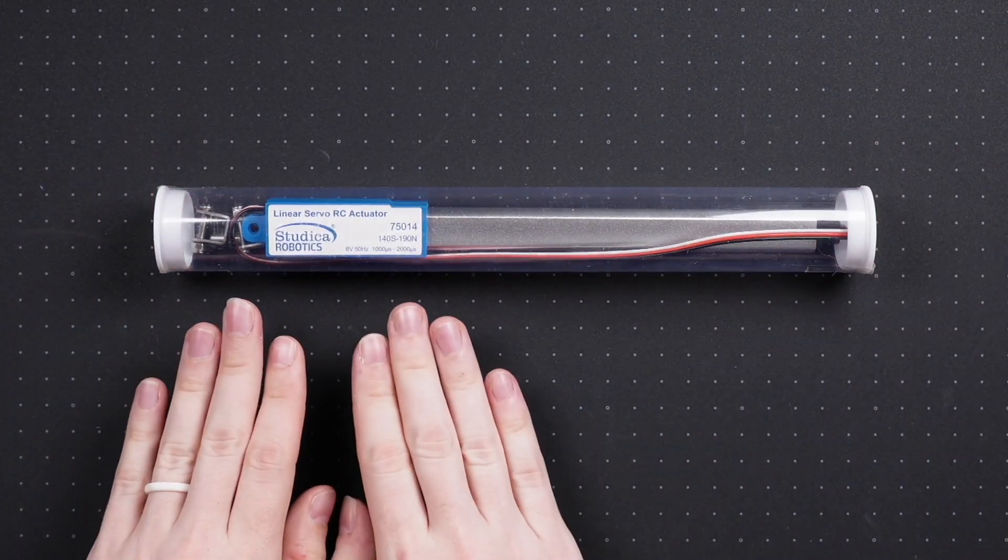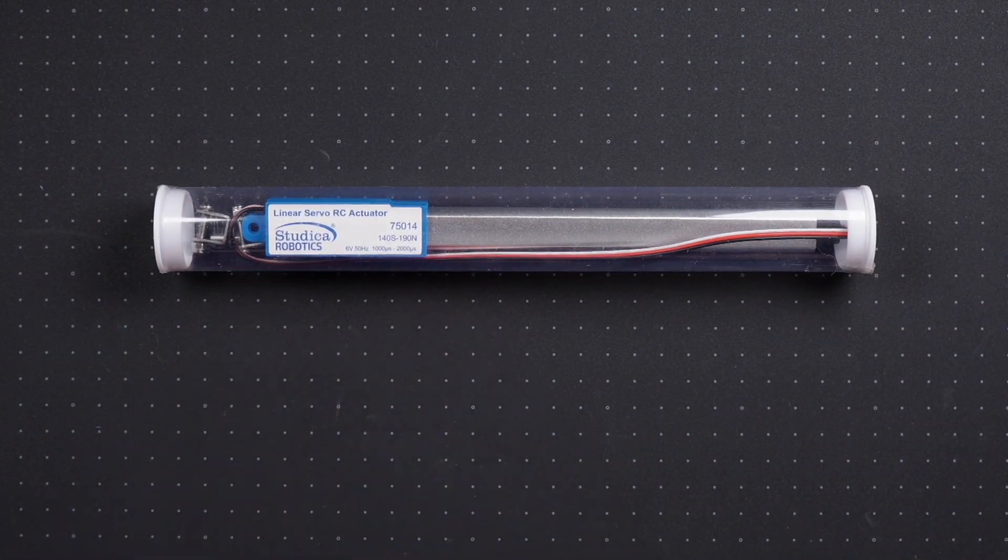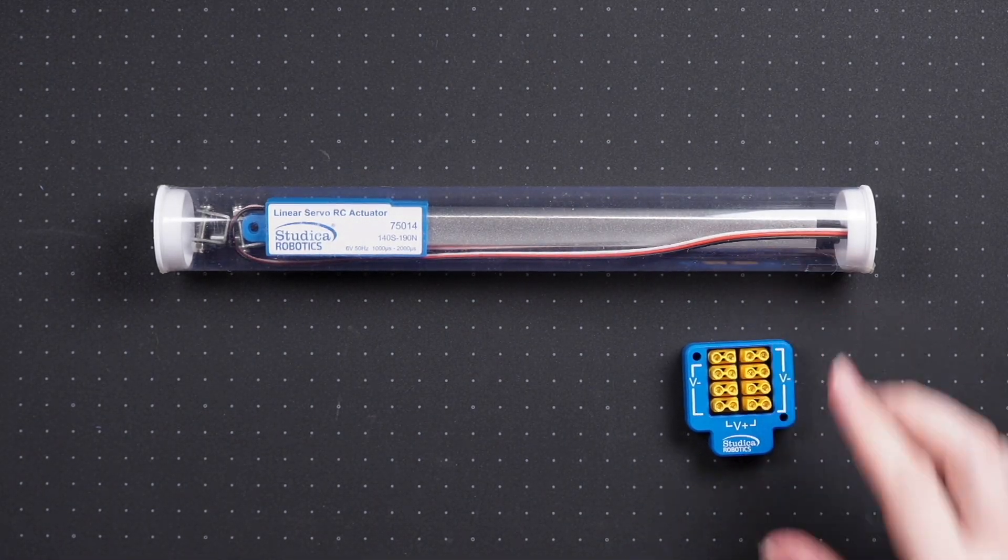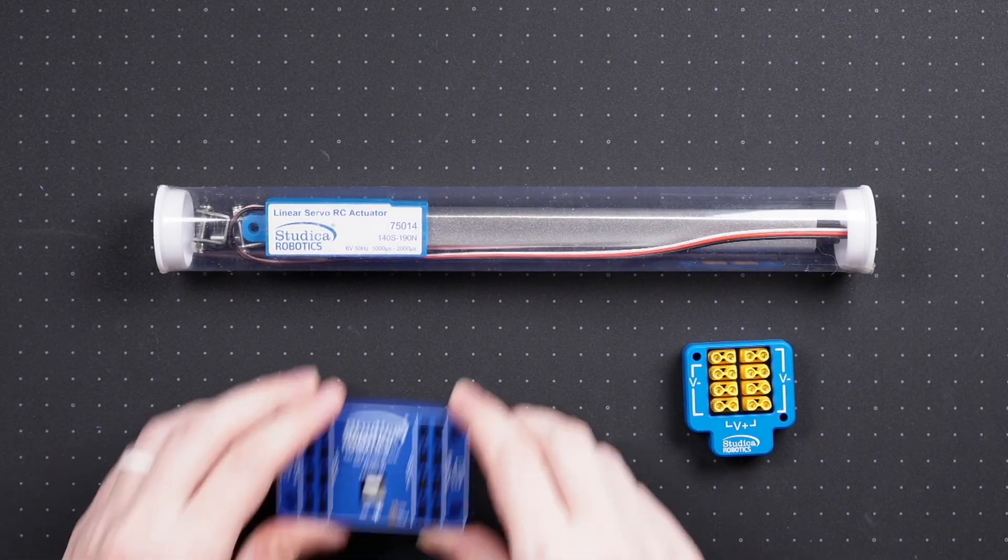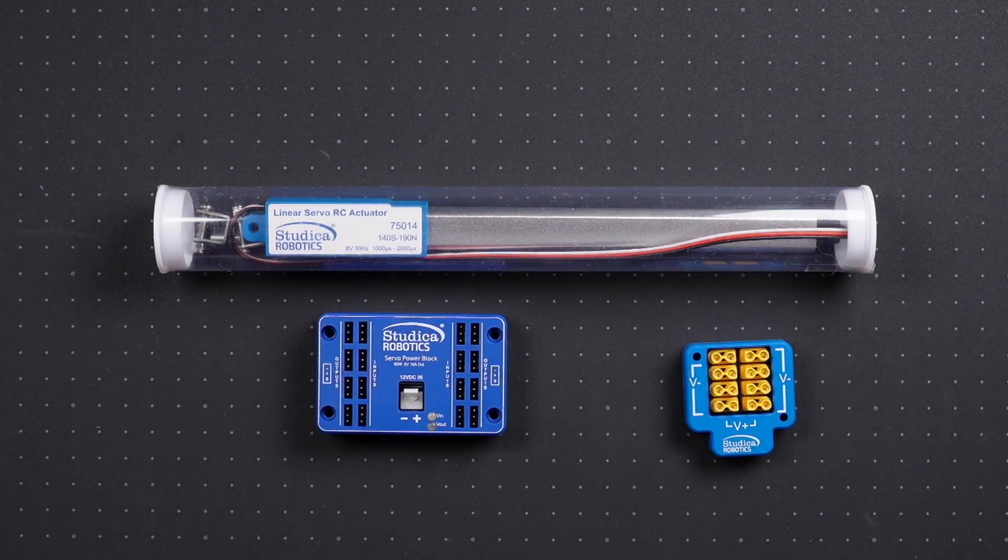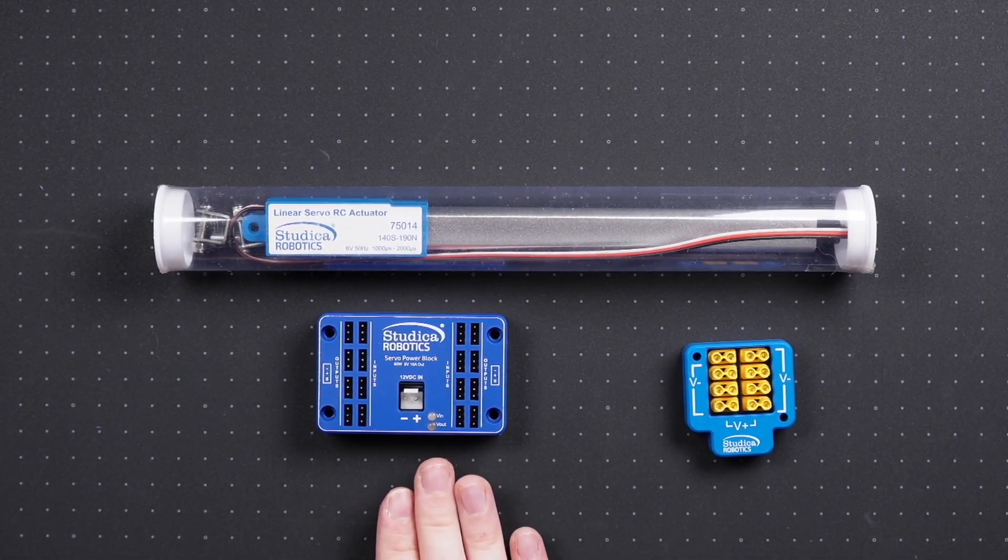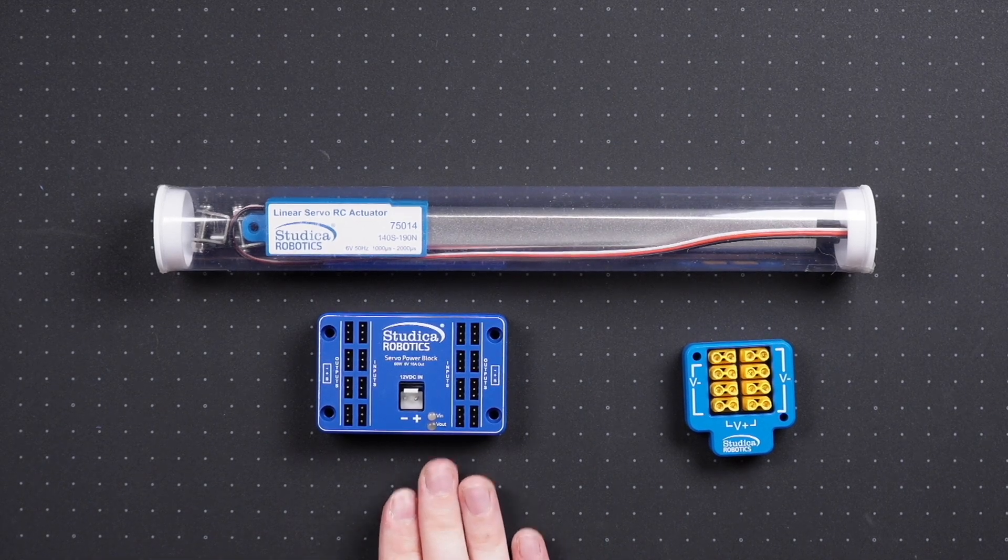I'll just quickly highlight their Linear Servo Actuator, which meets the requirements for servos in First Tech Challenge. They have a very nice power distribution block, which I think looks very nice, and they have a very compact servo power block, which can be a nice replacement for the REV servo power module that you might be using now.